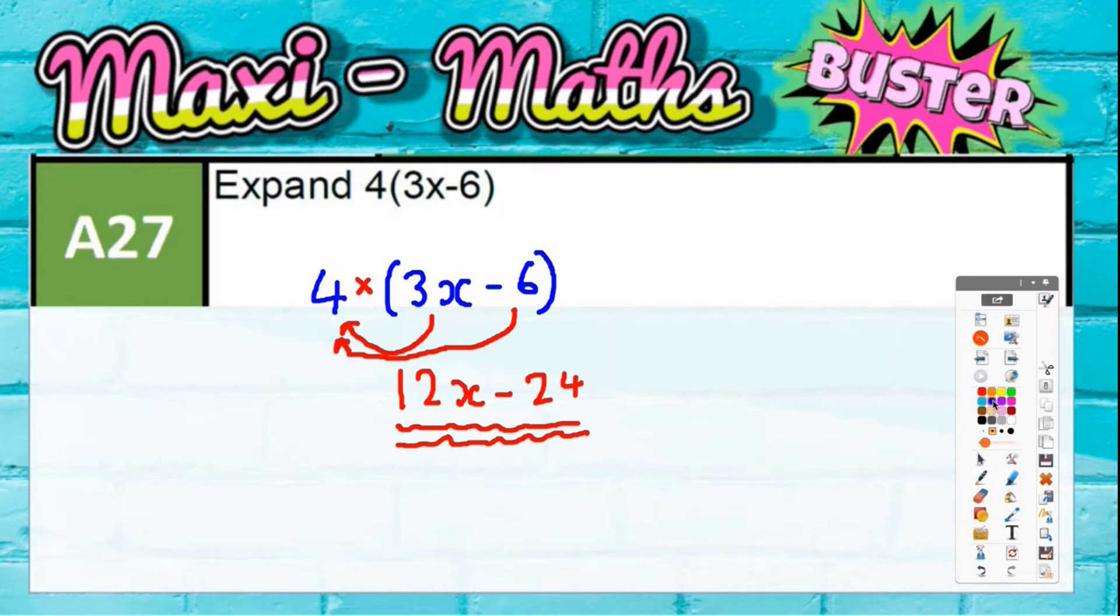Some people like to do a grid. If you're going to use a grid, you would do this like a times table grid. Whatever's in front of the bracket goes in front of the grid, whatever's inside the bracket goes on top of the grid, and then you multiply.